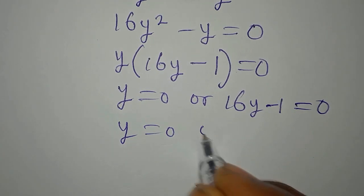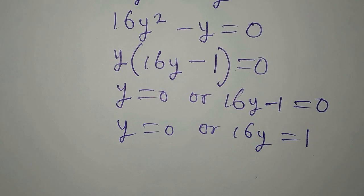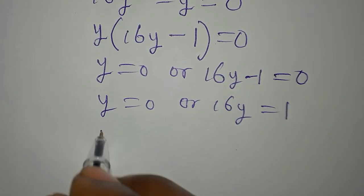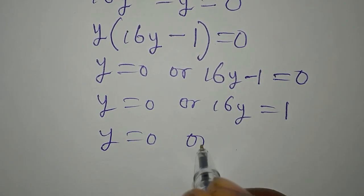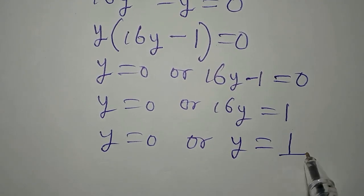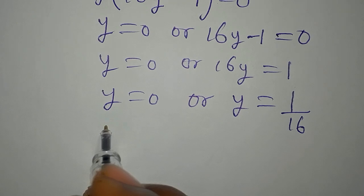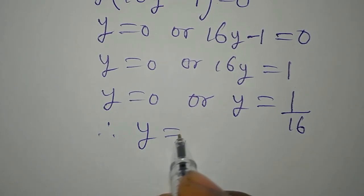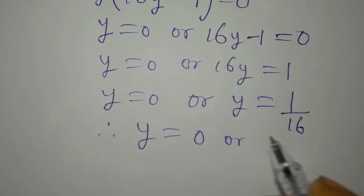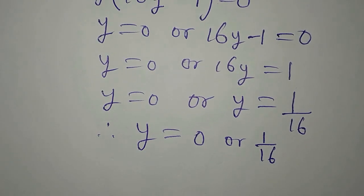Y remains 0 or 16y equals 1. At this point we have y to be 0 or y to be equal to 1 divided by the coefficient and that is 16. Therefore y is equal to 0 or 1 over 16. But then there's another method you could have used.